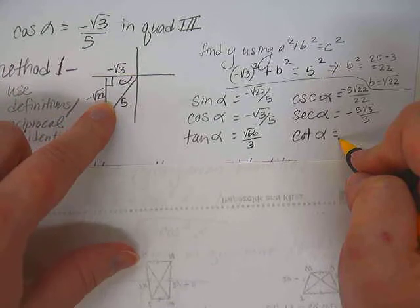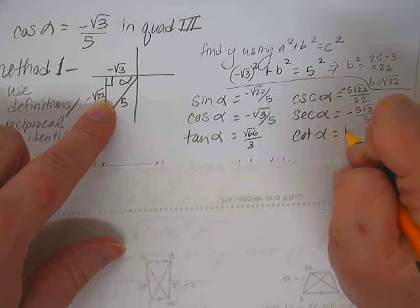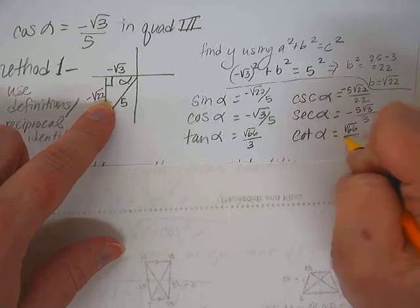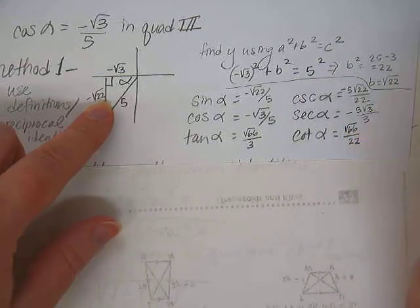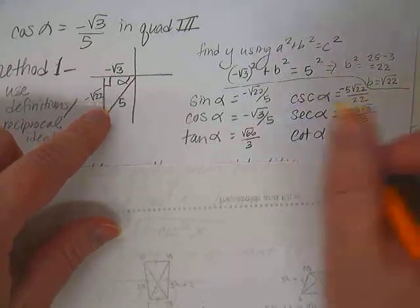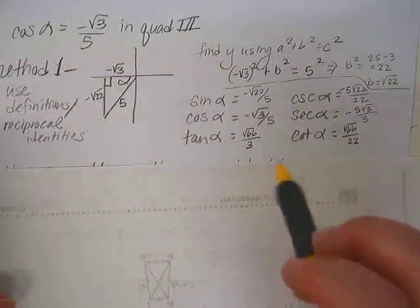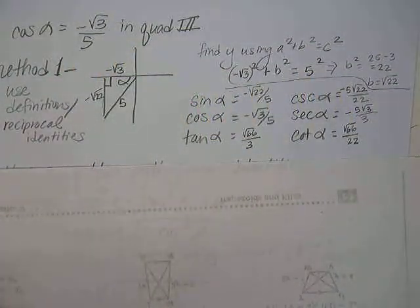So then cotangent would be the opposite of that, square root of 3 over square root of 22. So that means it would be square root of 66 over 22 instead, wouldn't it, by flipping it over? Is it okay I'm not showing those details? Are you guys okay with that? These are kind of a little bit ugly numbers to work with, but okay.